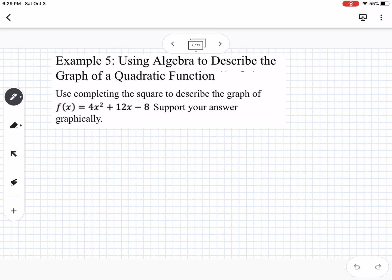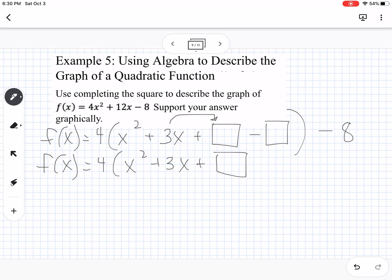And then the next one is using algebra to describe the transformation. So use completing the square to describe the graph of f(x) = 4x² + 12x - 8. Support your answer graphically. So the first thing that we want to do is we need to factor out a 4. So we want to get the x² by itself. And then if I take a 4 out of 12x, I'm left with 3x plus something, minus something, and I'm going to put minus 8 on the outside. So you notice that I'm leaving a space to complete the square. So to get the number that we put into the box, we're taking half of the b value, so half of 3, and we're squaring it. So this would be 2.25, and then we're going to subtract 2.25.